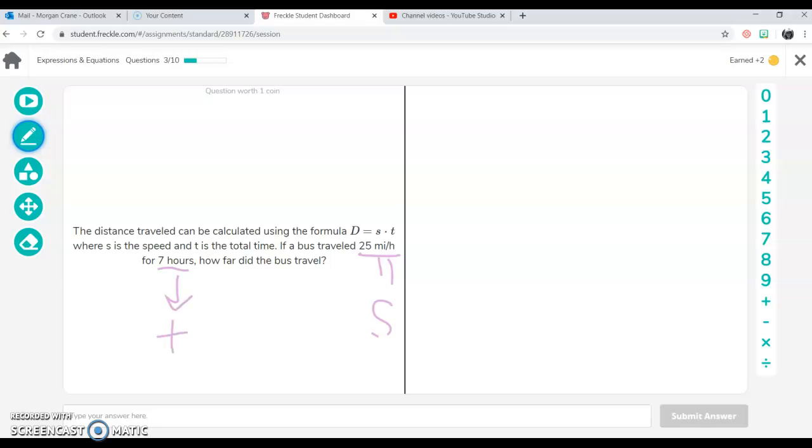All you have to do is take 25 and input for S. So this is our original problem. It's okay if the equal sign is in front. It doesn't change anything. So now I'm going to take 25 and input for S and take seven and input for T. 25 times seven. I'm going to pause it.